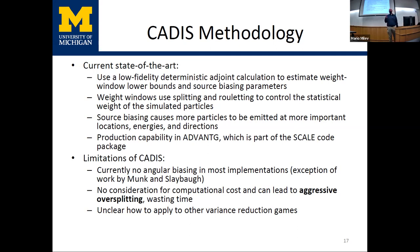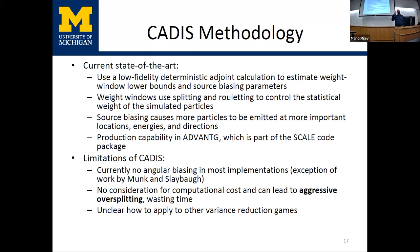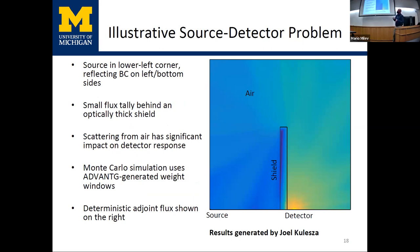However, CADIS is not a silver bullet — it doesn't work for every problem. Limitations include: there's not much angular bias (directional dependence in the weight windows is not very effective); weight windows from CADIS importance maps can lead to aggressive over-splitting, wasting computational time; and it's limited to a small number of tools in the toolbox, so it's unclear how to apply it to techniques that incorporate angular bias information.